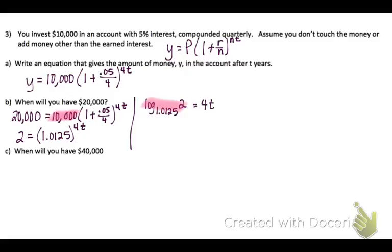Now we can solve this using change of base formula and then whatever you get make sure you divide by 4 and you'll have your answer for T.